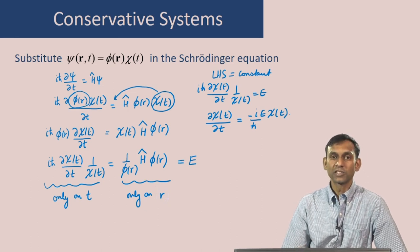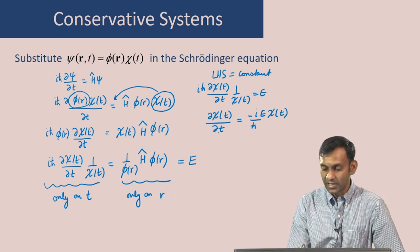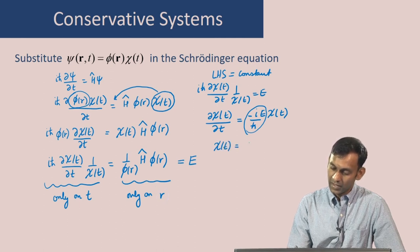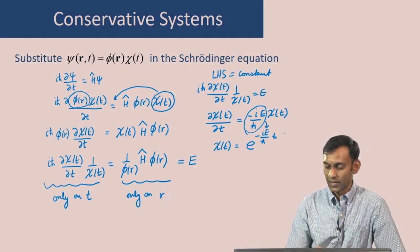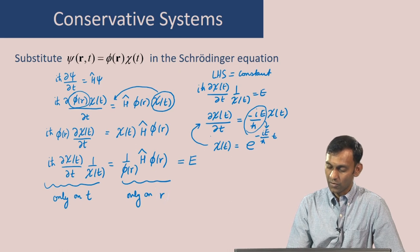This is a first-order ordinary differential equation where the function χ, when you take a first derivative, gives a constant times χ. A particular solution is χ(t) = e^(−iEt/ℏ), where you have this constant multiplied by t. This is a solution of the equation, and you can verify it by substituting back: if you substitute the solution on the left-hand side, you will get the right-hand side.